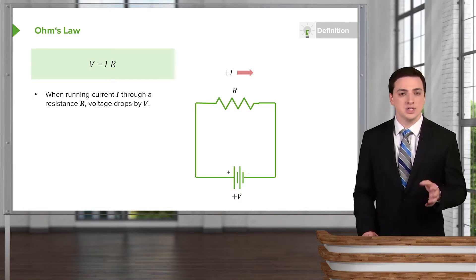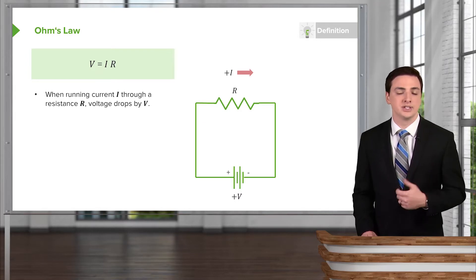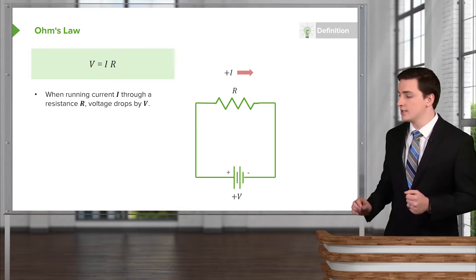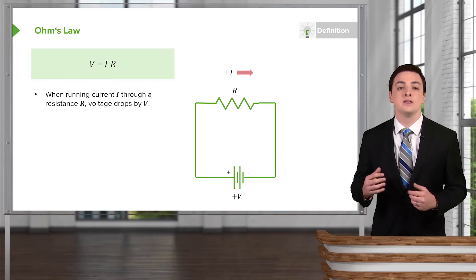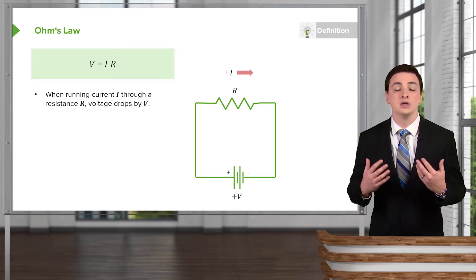This tells us that voltage equals current times resistance, but which voltage, current, and resistance is this? If you look at a circuit like this one, it's a very simple circuit. We have a voltage being applied, and that voltage is pushing current through a resistor.